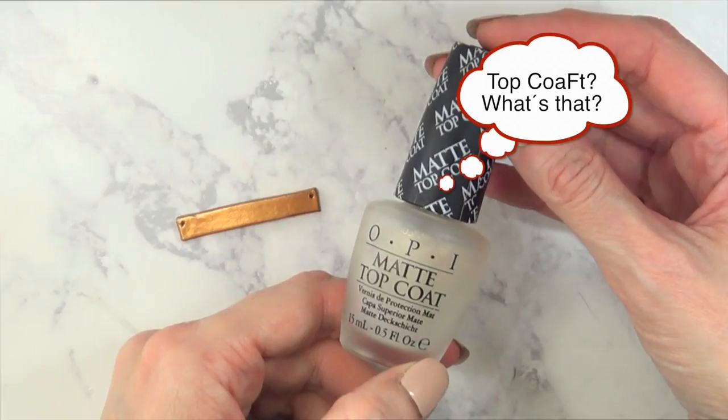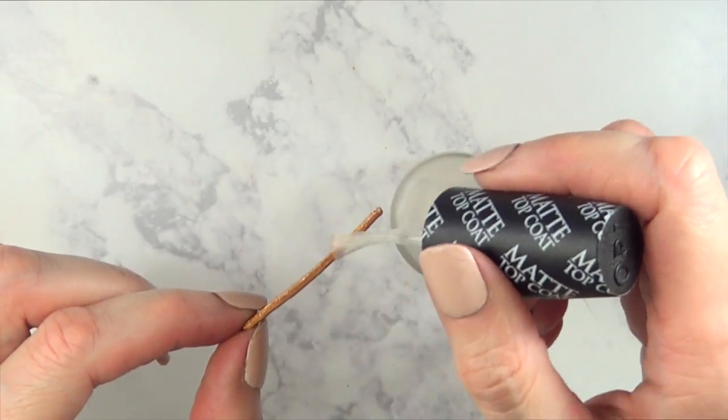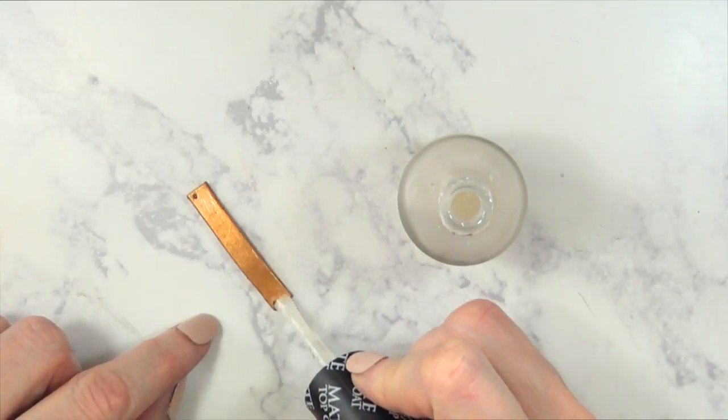And then I'm taking this matte top coat from OPI just because I want this to be a lot more matte than what it actually is. Cover the whole thing again and I just gave this one coat and I'm just going to wait for this to dry.